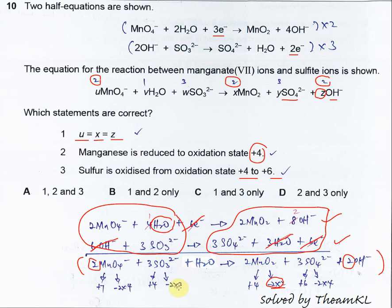Oxygen is negative 2 times 3, negative 6. Overall charge is 2 negative, so the sulfur must be positive 4. Then you can balance the charge.